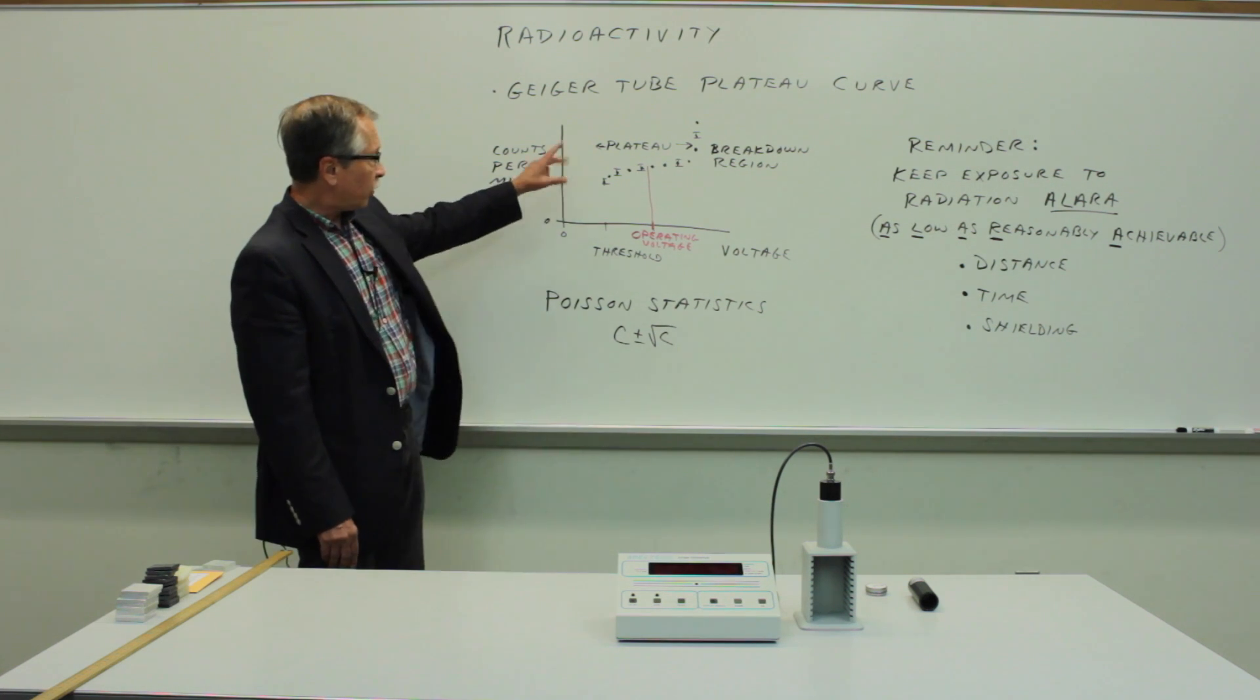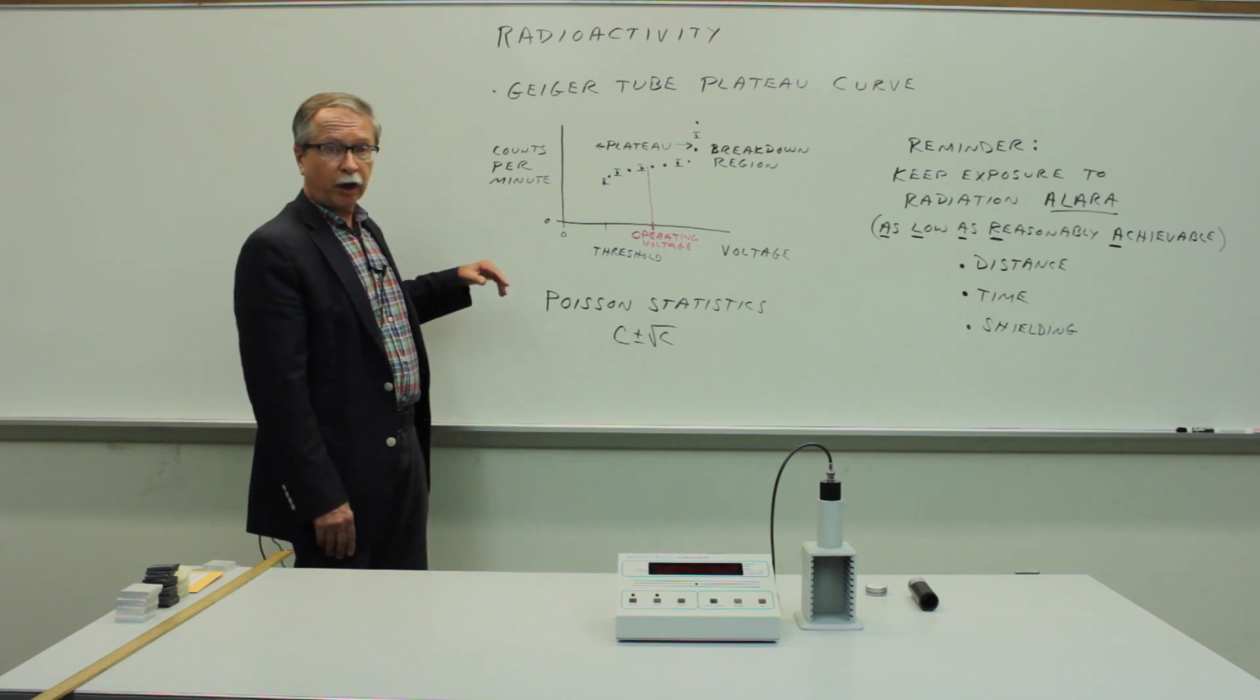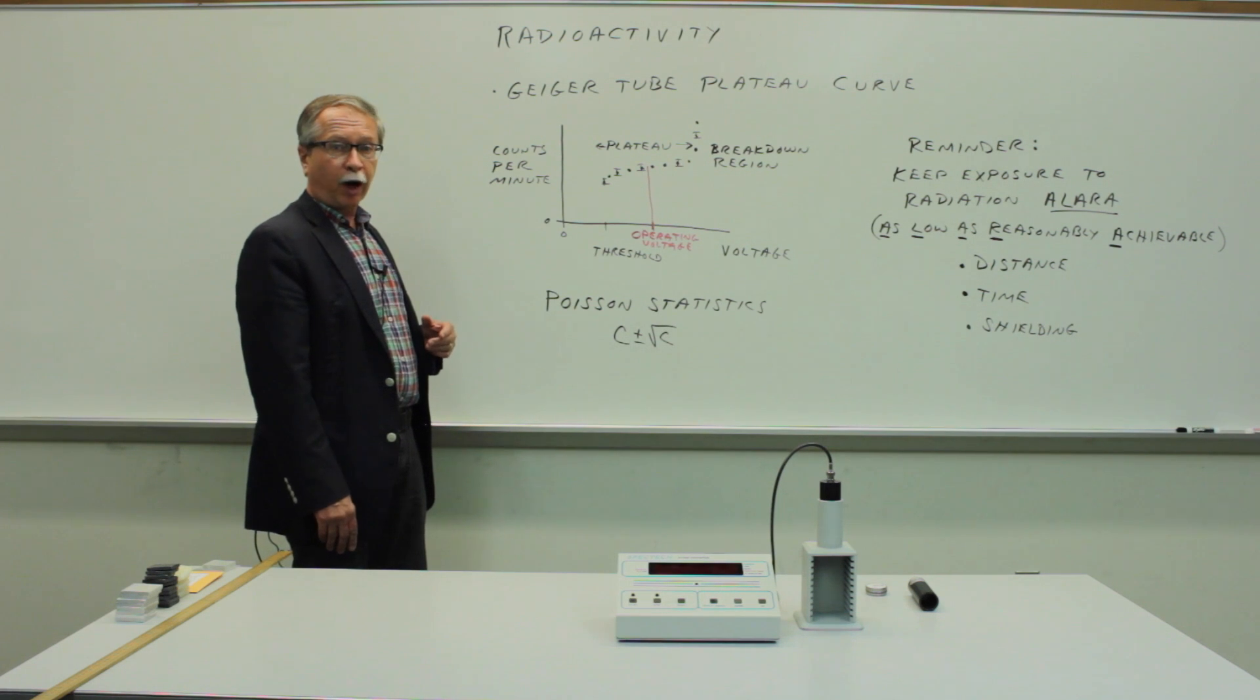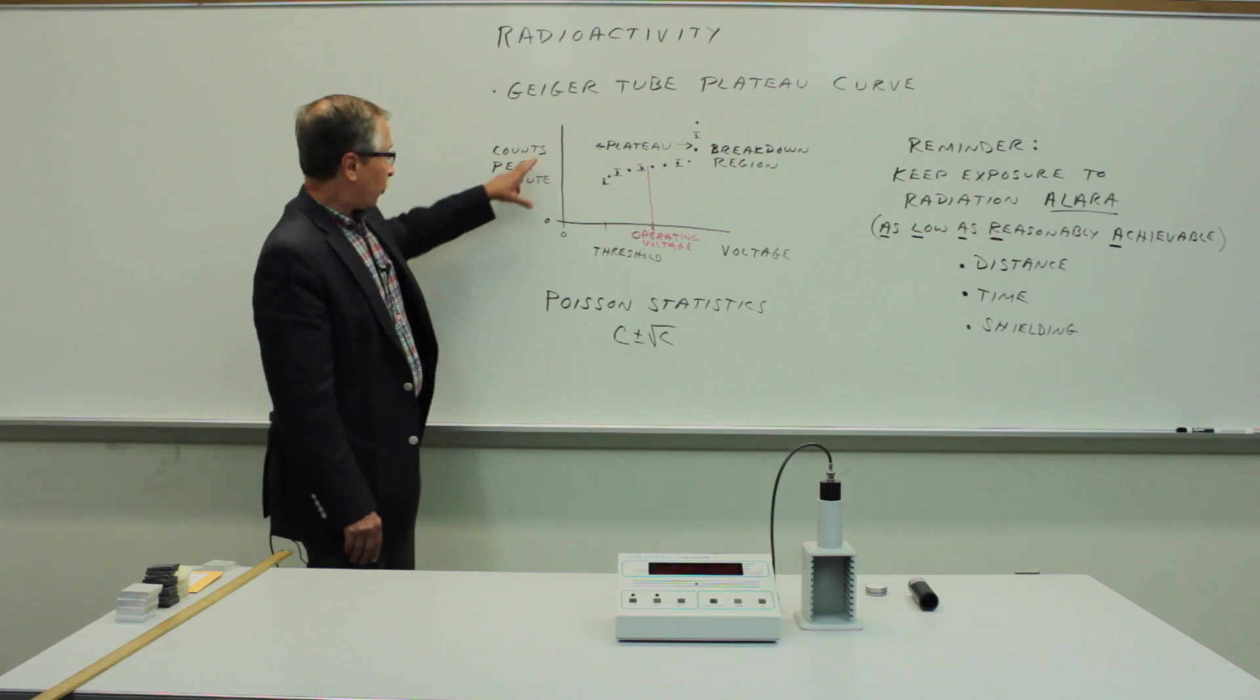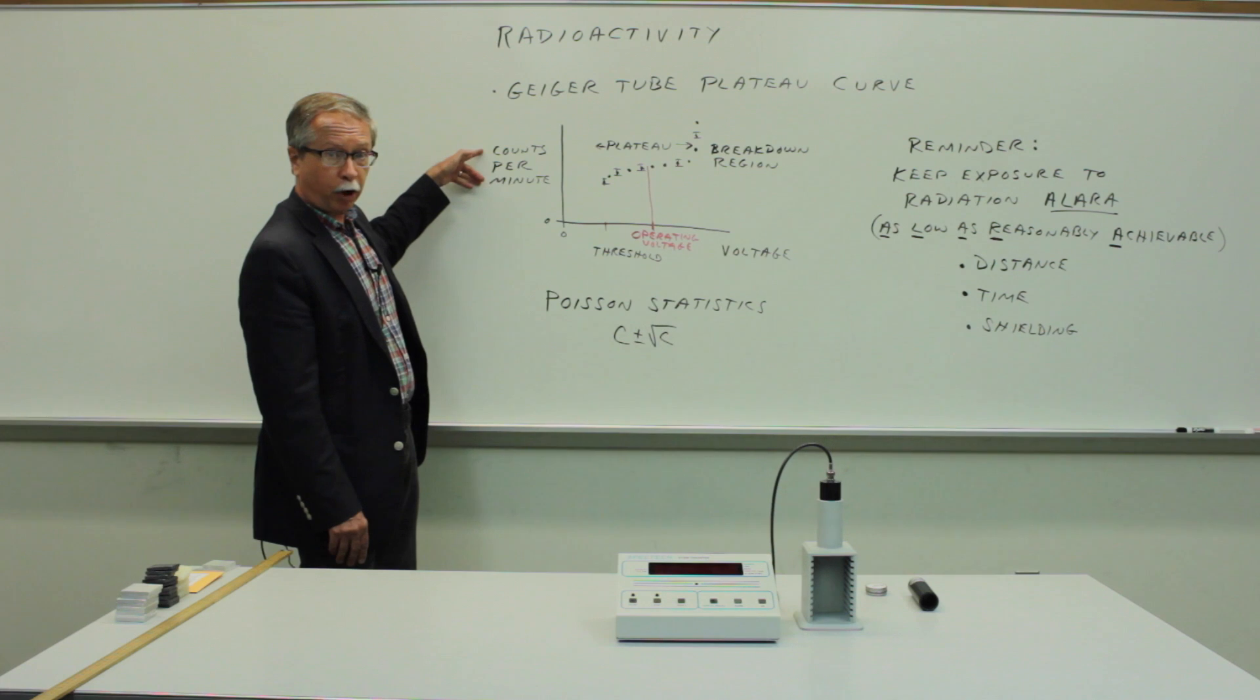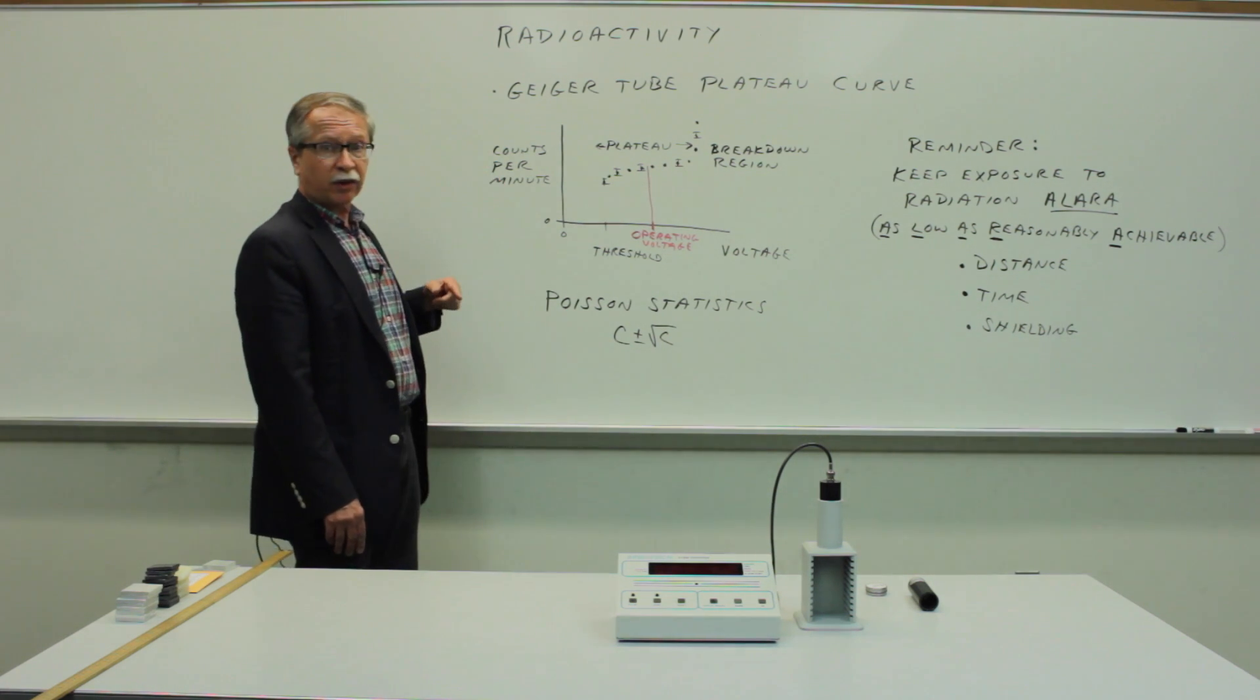The first experiment that we will do is sort of a standard procedure for setting up the instrumentation. We're going to determine the proper operating voltage for a Geiger counter. So this involves making a measurement of the number of counts of radioactive decay particles in a certain time interval. And we'll choose a minute as the time interval.